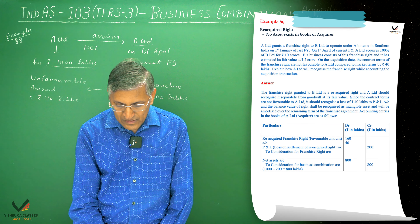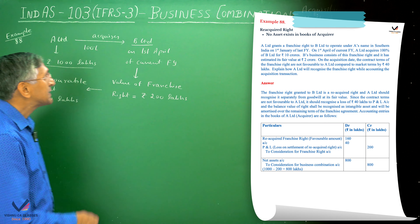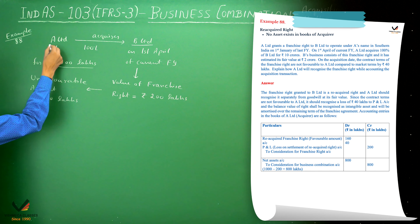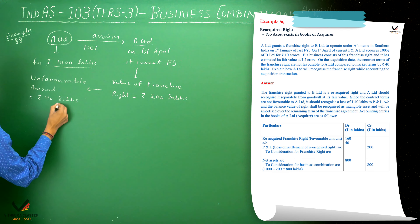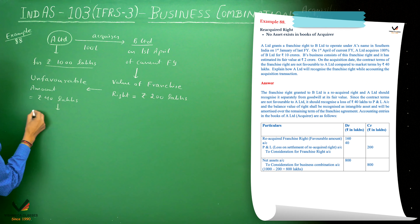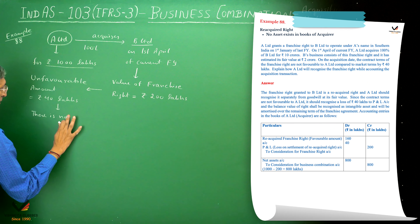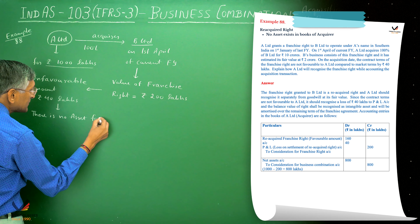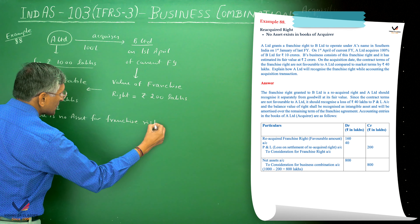They are asking how A Limited will recognize the franchise right while accounting for the acquisition transaction. In the books of A Limited, there is no prior asset recognized for the franchise right.